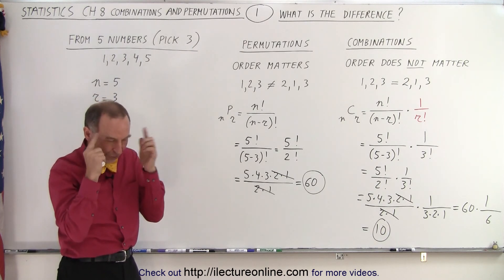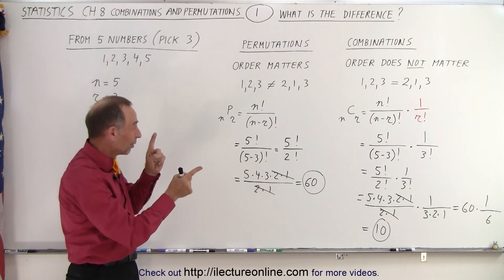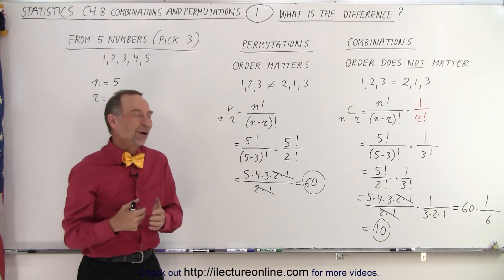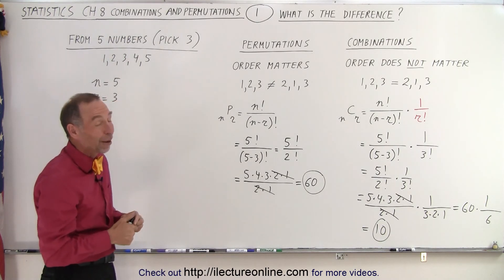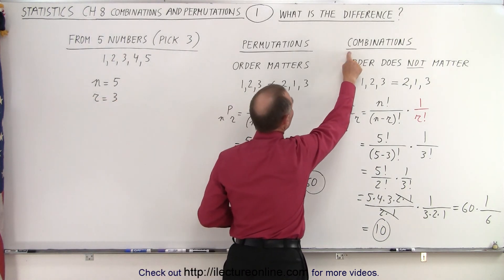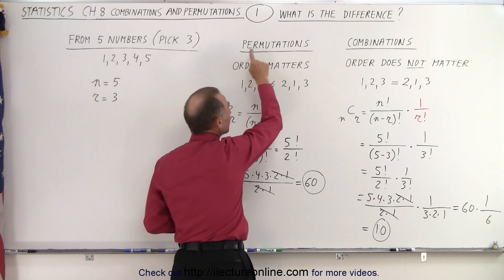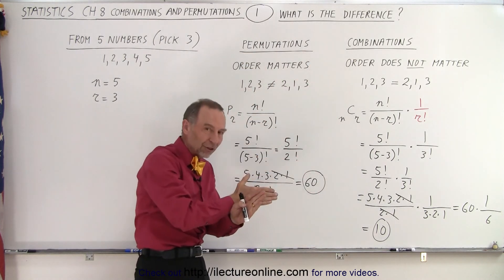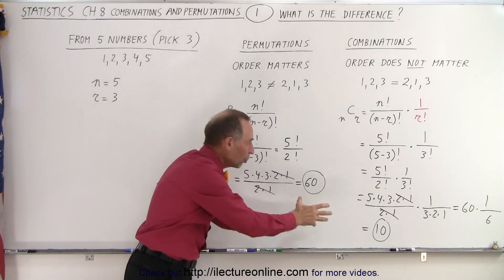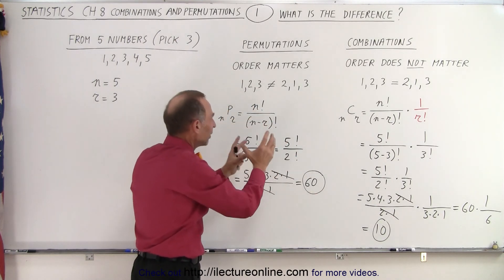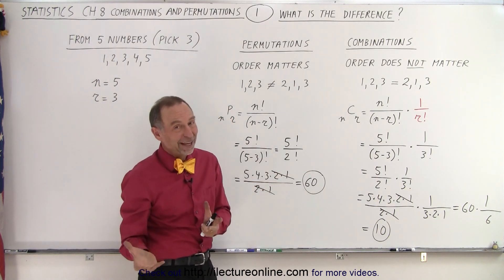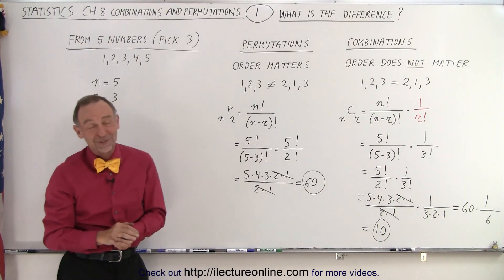The only thing is you have to keep straight in your mind which word belongs to which definition, because that's sometimes a way to get mixed up. The way I remember is that combinations starts with a C, permutations starts with a P. Combinations comes first in the alphabet compared to P for permutations. Combinations is a smaller number, permutations is always a bigger number. That's how I remember the difference between combinations and permutations.